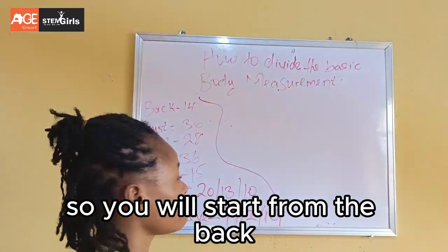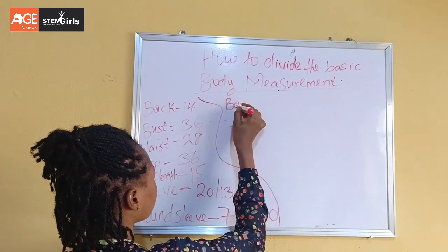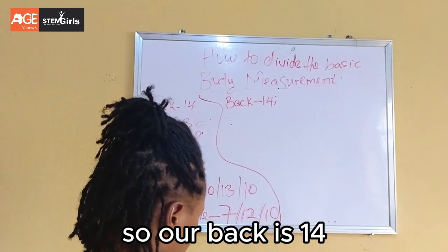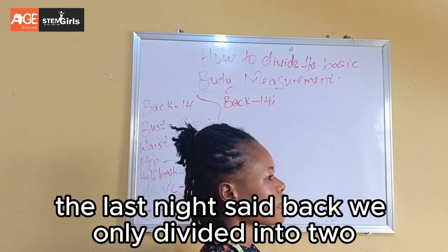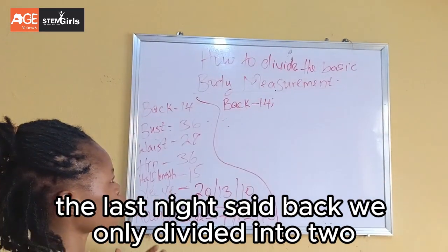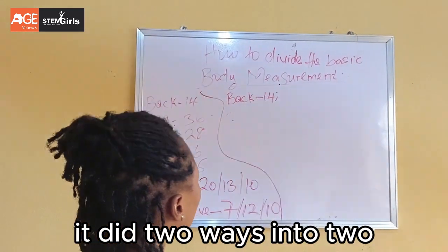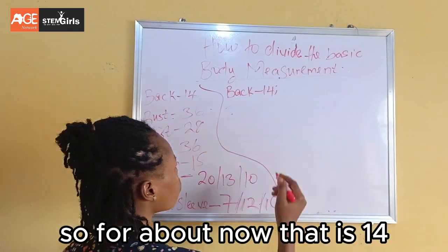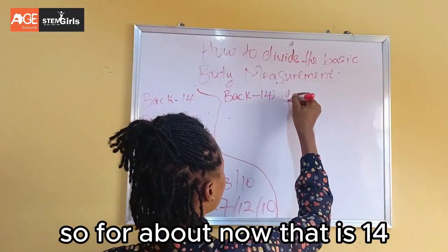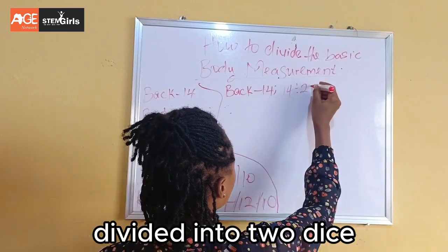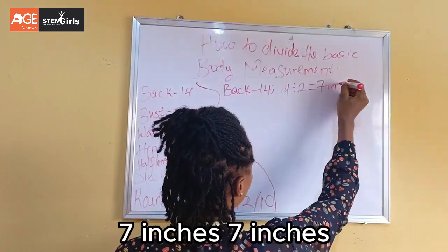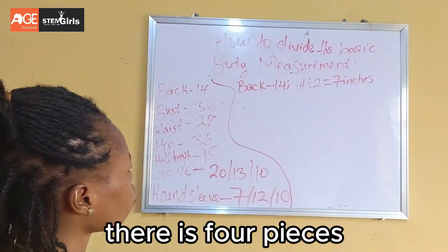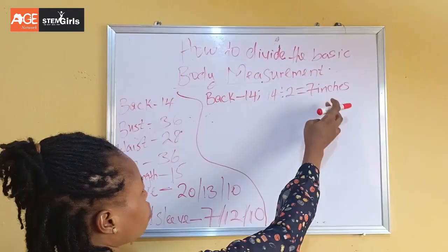We start from the back. Our back measurement is 14. As I mentioned in the last class, we already divided it into two, and we added the sewing allowance. So for the back, 14 divided by 2 gives us 7 inches. After you fold the fabric into four places, you measure 7 inches for your back.